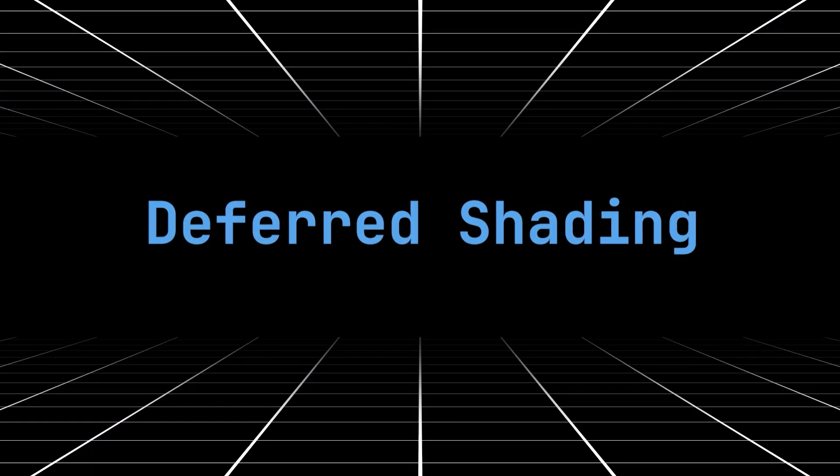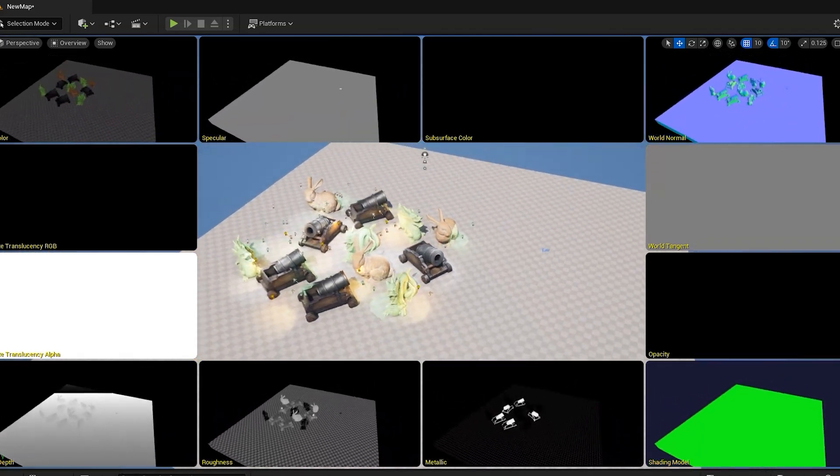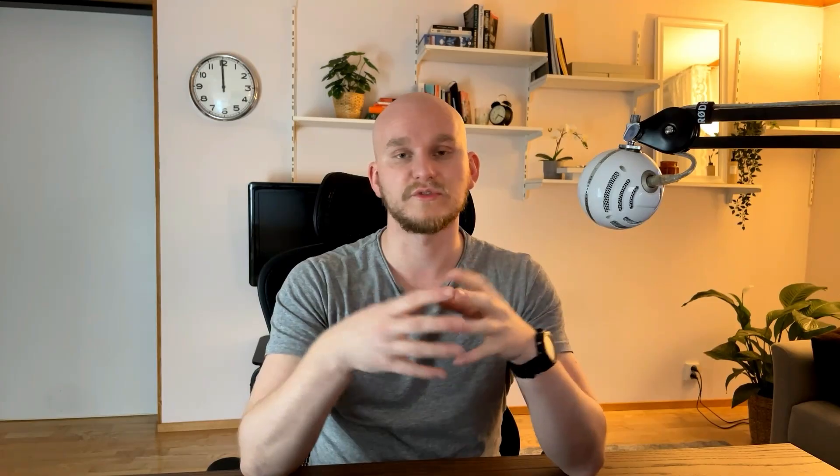Deferred shading is a great way to optimize light calculations. Instead of doing normal light calculations directly, we render the geometry to specific render targets like albedo, normal, roughness, metalness, etc. We then use these render targets — also known as the G-buffer — together with the light data and do them all together in one pass. Light pre-pass is a variant of traditional deferred rendering. It separates rendering into the G-buffer and lighting calculations, but light pre-pass just calculates the light directly into a texture, getting away with some data we don't need in the G-buffer, making the G-buffer smaller.